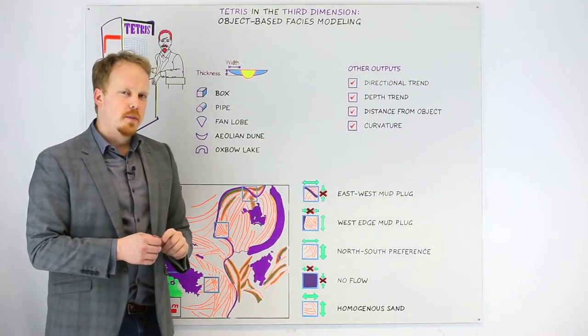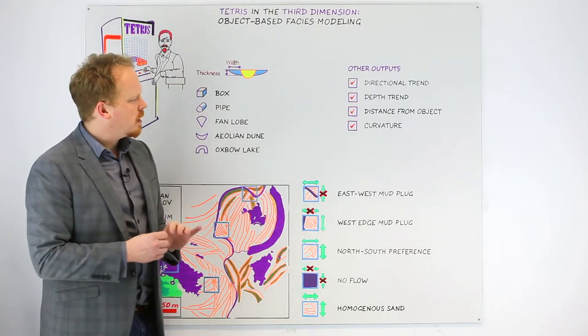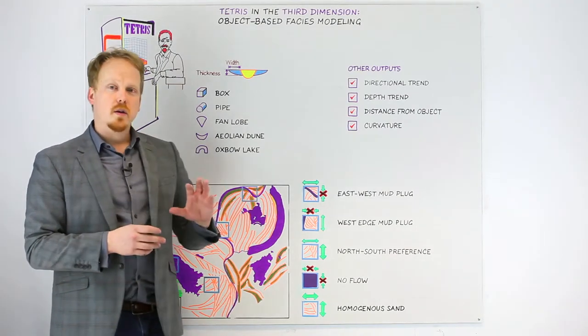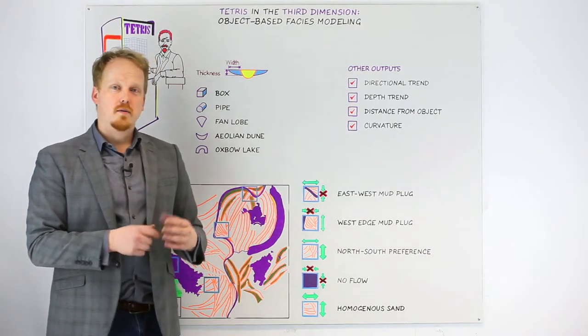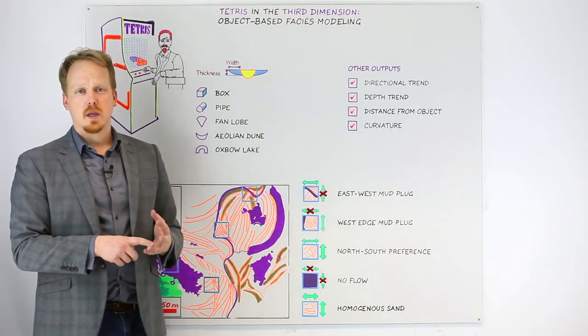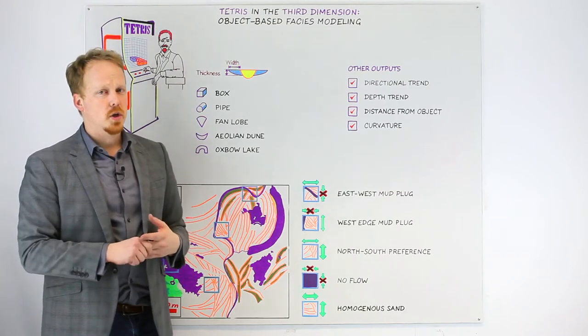except for one other method that is developing, that I've seen out there coming out of Geneva, a method where you use multipoint statistics. These simultaneously simulate rock types and continuous properties. But as far as I know, that's not particularly commercially available yet.